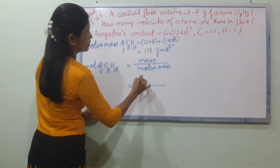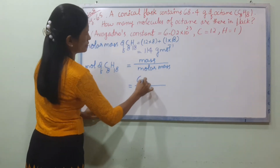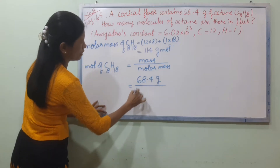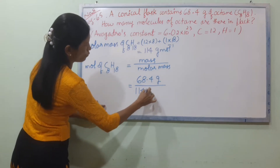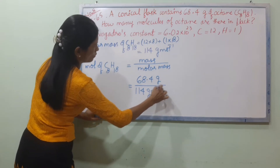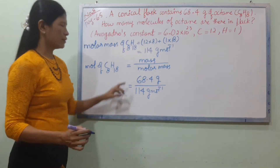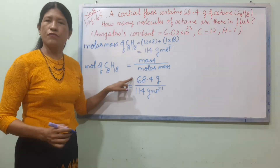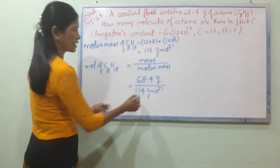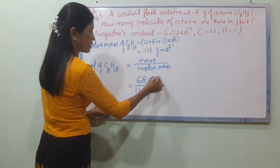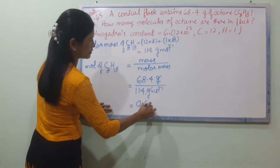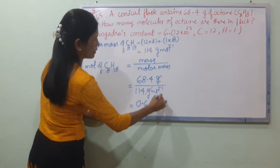Molar mass: 68.4 grams and 114 grams. 68.4 grams, 114 grams, and 1.6 grams.